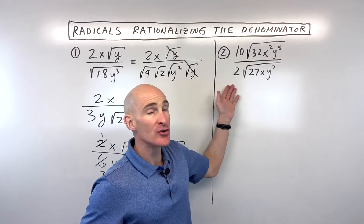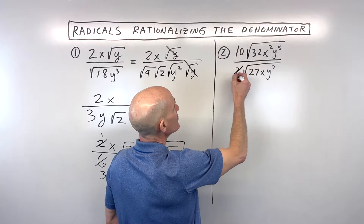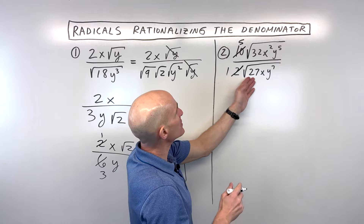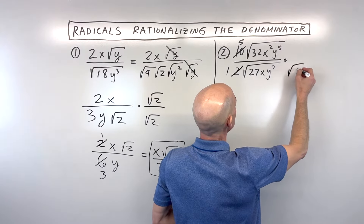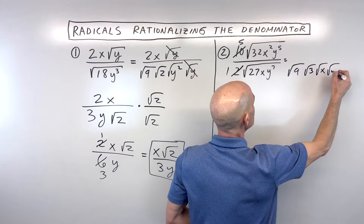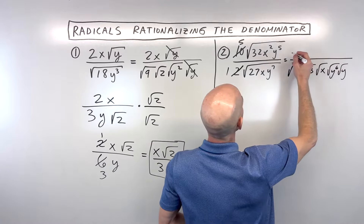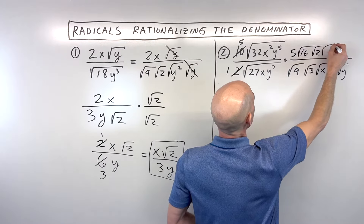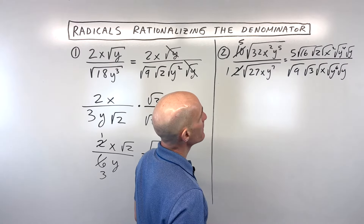Let's take a look at another example — see if you can do example number 2. We've got two radicals here with 10 and 2. I can see right away I can reduce these: 2 goes into 10 five times, and 2 goes into 2 once. Now we can pull out some perfect squares. 27 is going to be the square root of 9 times the square root of 3, times the square root of x. And y to the 7th we can write as y to the 6th times y, which is a perfect square. In the numerator, we've got 5, and 32 we can break up into 16 times 2. The square root of x squared is a perfect square, and y to the 5th we can break up into y to the 4th times y.